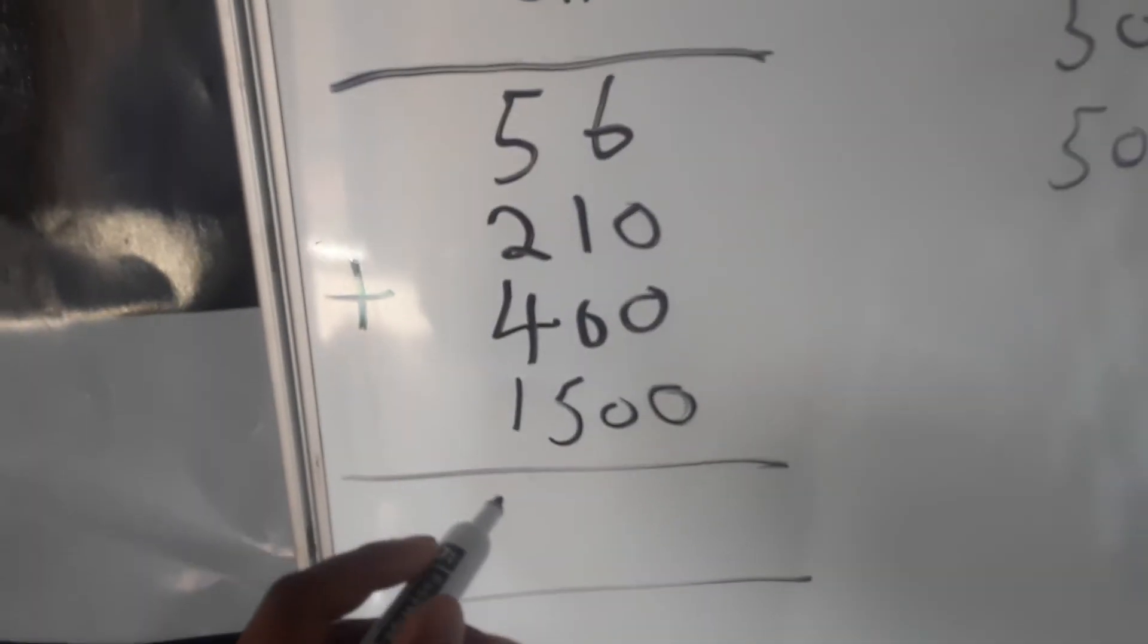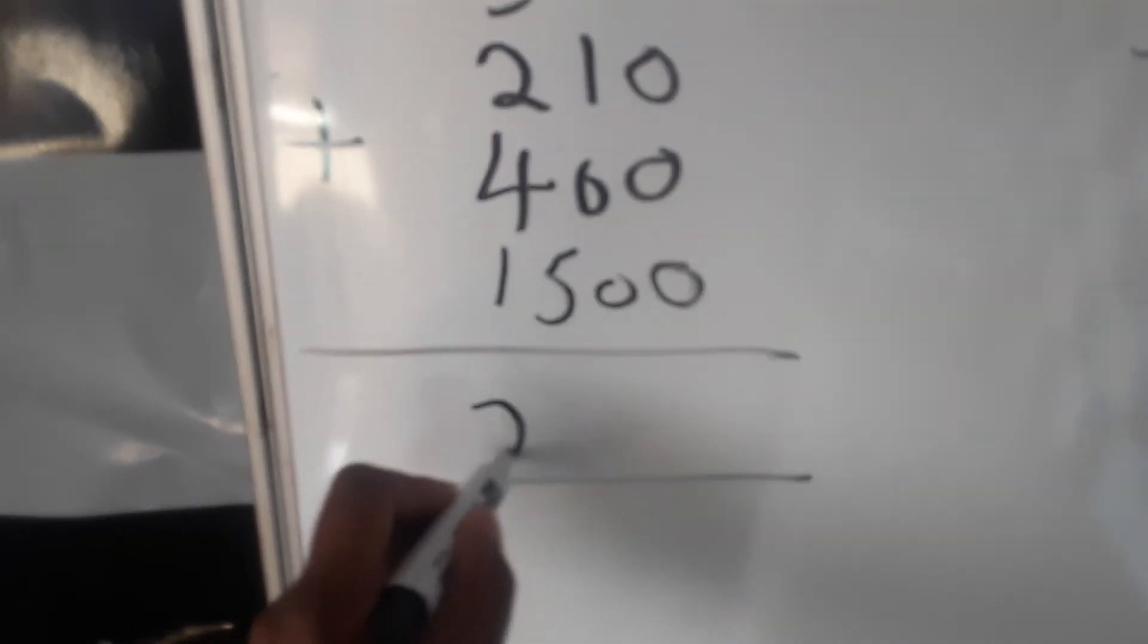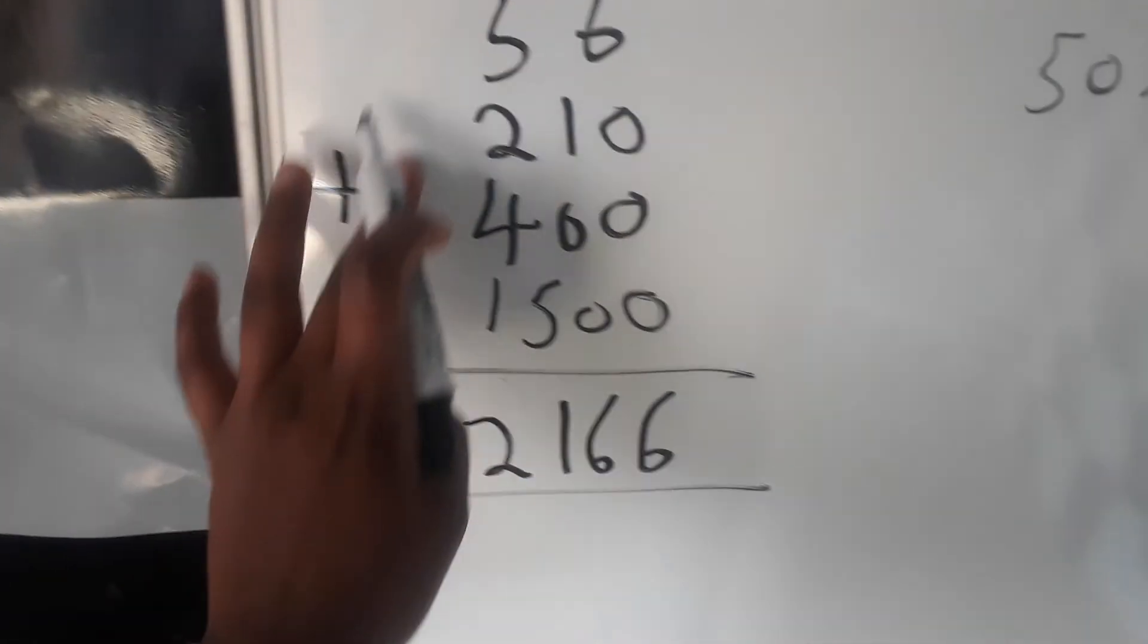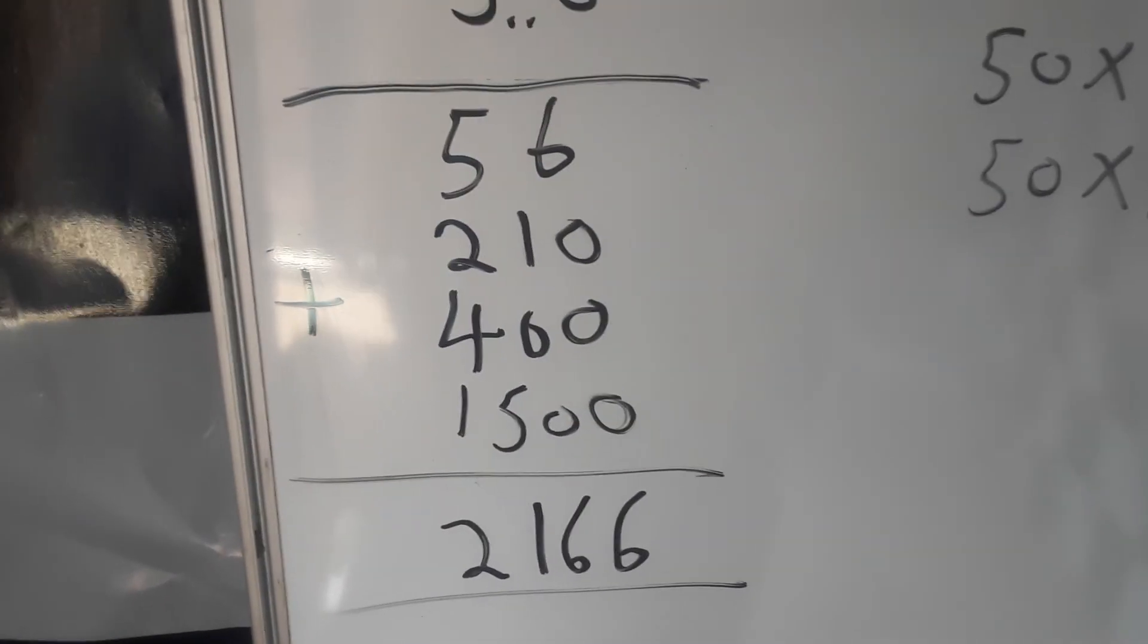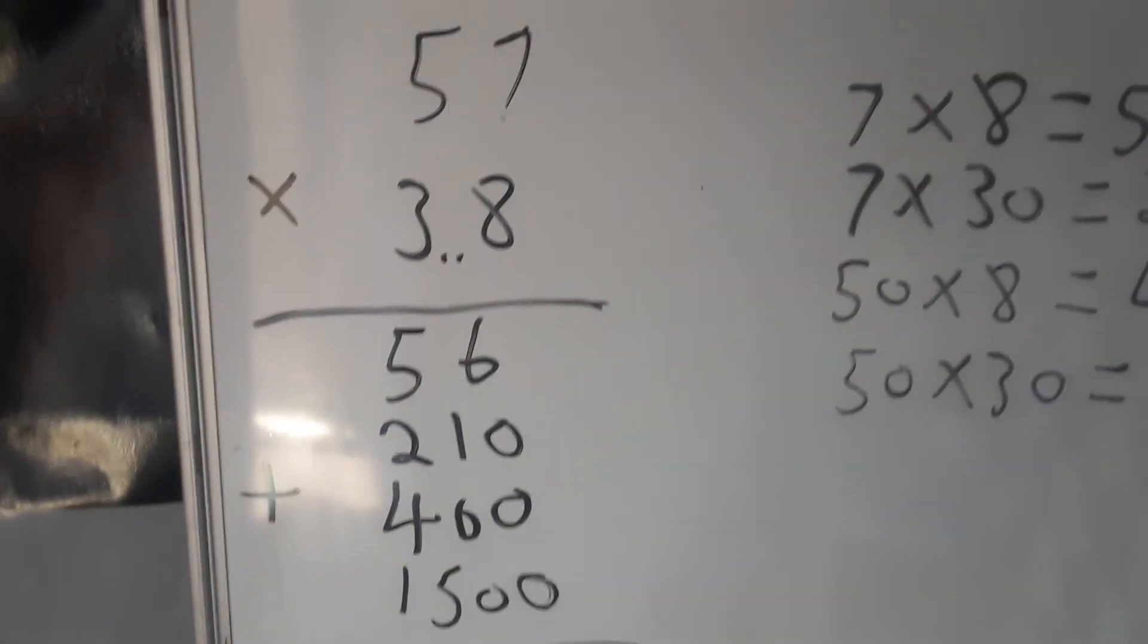We'll get the total of 2166 if we add all of these numbers. You can add them together and see if you're getting the same results.